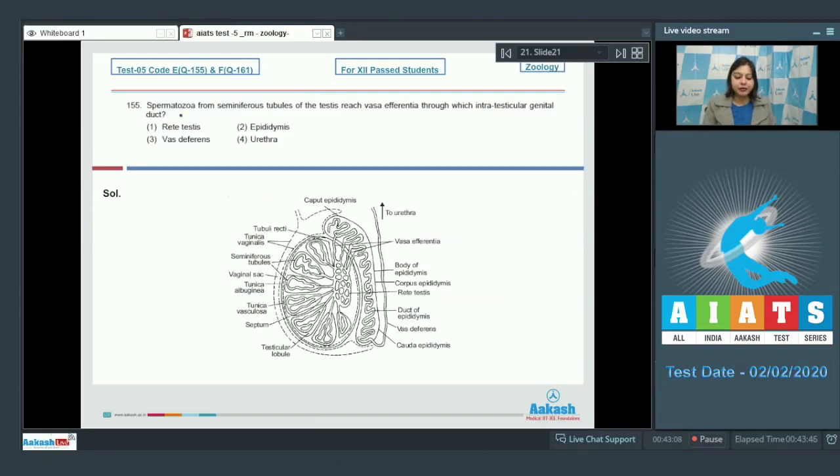Proceeding to the next question students. Question number 155. Spermatozoa from seminiferous tubules of the testes reach vasa efferentia through which intratesticular genital duct? Rete testis, epididymis, vas deferens and urethra. Here we have a section depicting the LS of testis.